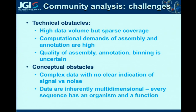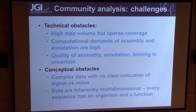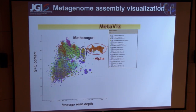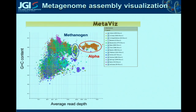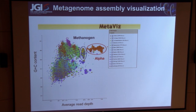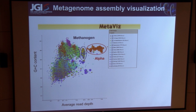We have these really complex data, but it's hard to tell what's signal and noise. The data are inherently multidimensional — each sequence really has an organism and a function, and that's what we want to integrate together. This is a very recent project that I have with Ina. These are more like mock-ups than a finished tool, but even already, just being able to visualize these data has been quite powerful for me. This is an actual wetlands sample, and even though only a small fraction of the data assembled, we were able to reconstruct what we think are more or less some complete genomes out of it.